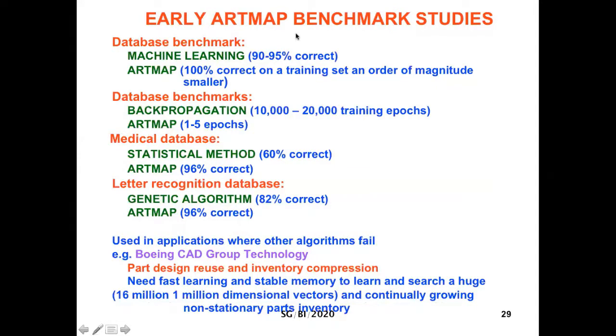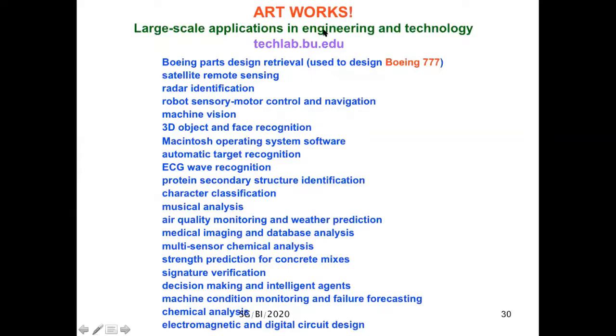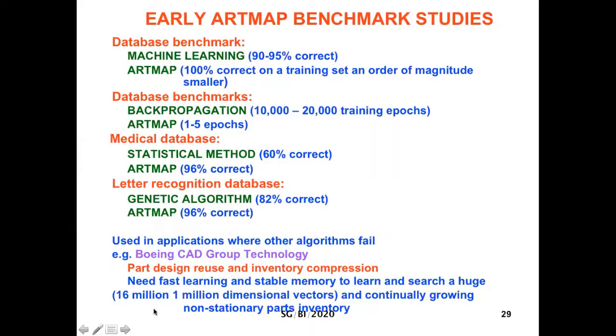Very early on, there were successful ART benchmark studies, which is why ART started to be used right away. Whether against machine learning, backpropagation, statistical methods, or genetic algorithms, ART did better in accuracy and/or training speed. That led to many large-scale applications in engineering and technology, some of which you can find at our tech lab website at BU. One of them being the Boeing parts design retrieval system that was used to design the Boeing 777, which was a challenge because that inventory included 16 million, one-million-dimensional vectors and was continually growing. It's a non-stationary parts inventory and one needed fast learning and stable memory to learn and search it.